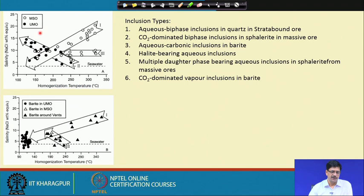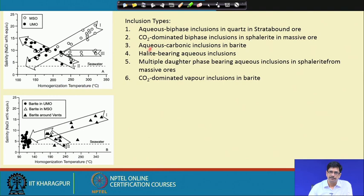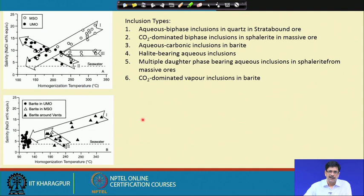The authors interpreted their data in terms of a mixing trend. Inclusion types observed include: aqueous biphase inclusions, CO₂-dominated biphase inclusions, aqueous-carbonic inclusions, halide-bearing inclusions, multiple daughter phase aqueous inclusions, and CO₂-dominated vapor inclusions. An important characteristic feature of this VMS occurrence is the presence of carbon dioxide in the fluid. The mixing trend is shown against a boundary representing seawater at about 3.5 weight percent. Fluid characteristics well above seawater in both salinity and temperature indicate derivation from different sources.